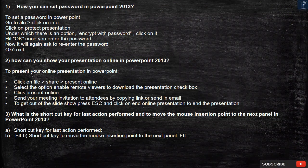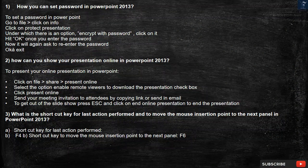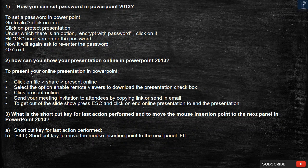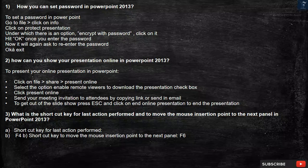Question 1: How can you set a password in PowerPoint 2013? To set a password in PowerPoint, go to File, click on Info, click on Protect Presentation. Under which there is an option — Encrypt with Password — click on it and hit OK once you enter the password. It will again ask to re-enter the password, then click OK and exit.